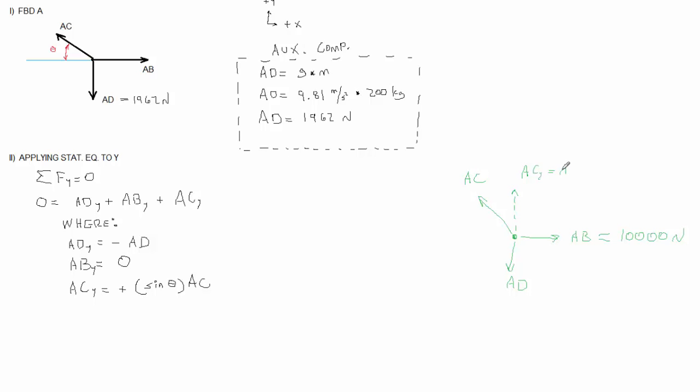So there is going to be a y component of some type. It's going to equal 1962 newtons. If we set AB equal to 10,000 newtons, ACX for static equilibrium to be true, it also has to be 10,000 newtons. And you can see the issue. AC is going to be the square root of ACX squared plus ACY squared, which the combination of 10,000 newtons and 1962 newtons is going to be greater than 10,000 newtons.